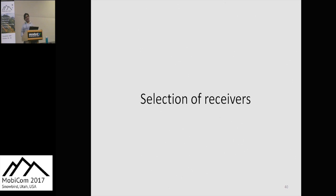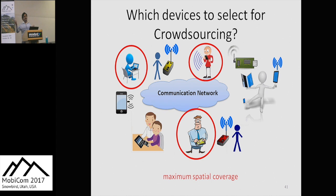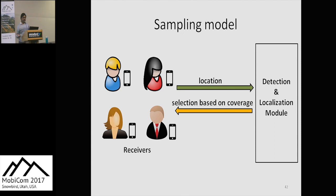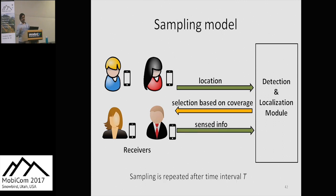Now I'll talk about our receiver selection mechanism. The question is: there may be various receivers willing to participate, but we need to select only a few such that spatial coverage is maximized. In our model, willing receivers send their location to the controller, the controller runs our algorithm to select a subset, and those selected receivers sense the RF medium and report data to the controller. This is repeated after an interval of T seconds.